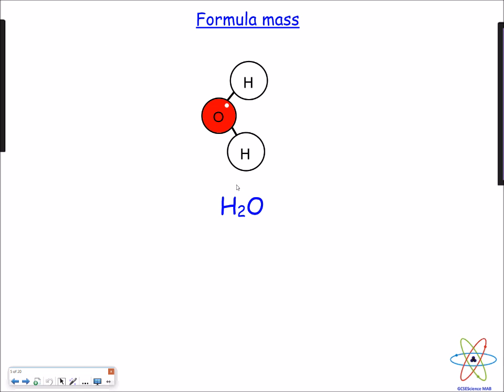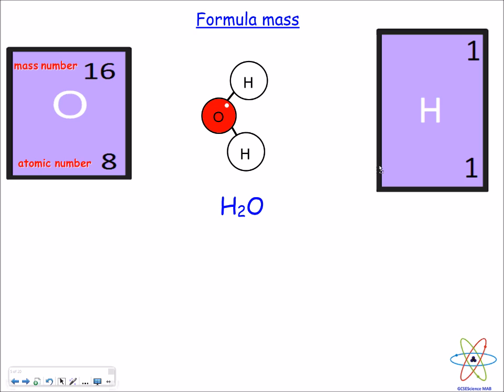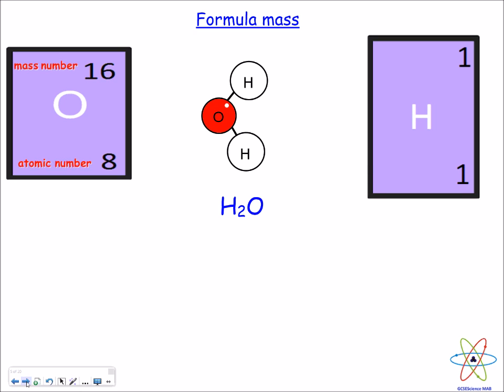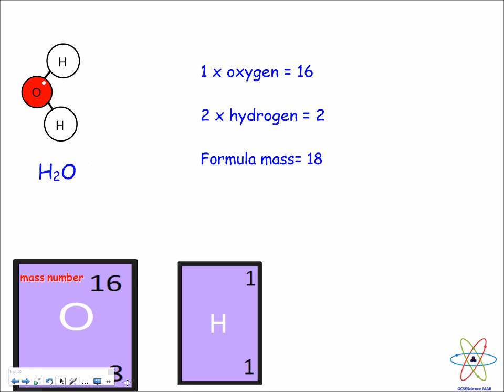Here is the structure of water, or H2O. You can see it's got oxygen and hydrogen. So how do you work out the formula mass? We need the mass numbers of oxygen and hydrogen and basically add up the elements. We've got one oxygen, so 1 times 16 gives us 16. We've got two hydrogens, each with a mass of 1, so 2 times 1 gives us 2. Add 16 and 2 together and we end up with a formula mass of 18 for water.